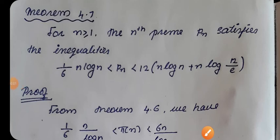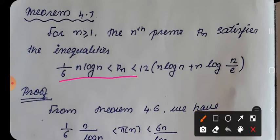Students, today we are going to prove Theorem 4.7 from the second module. It states that for n greater than or equal to 1, the nth prime pn satisfies the inequalities: 1/6 · n·log(n) < pn < 12·n·log(n) + n·log(12/e).